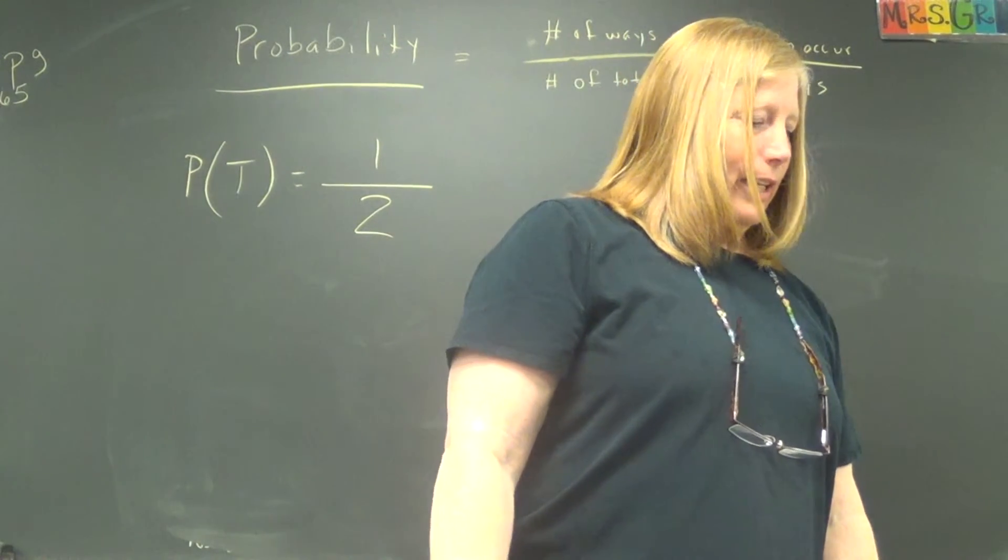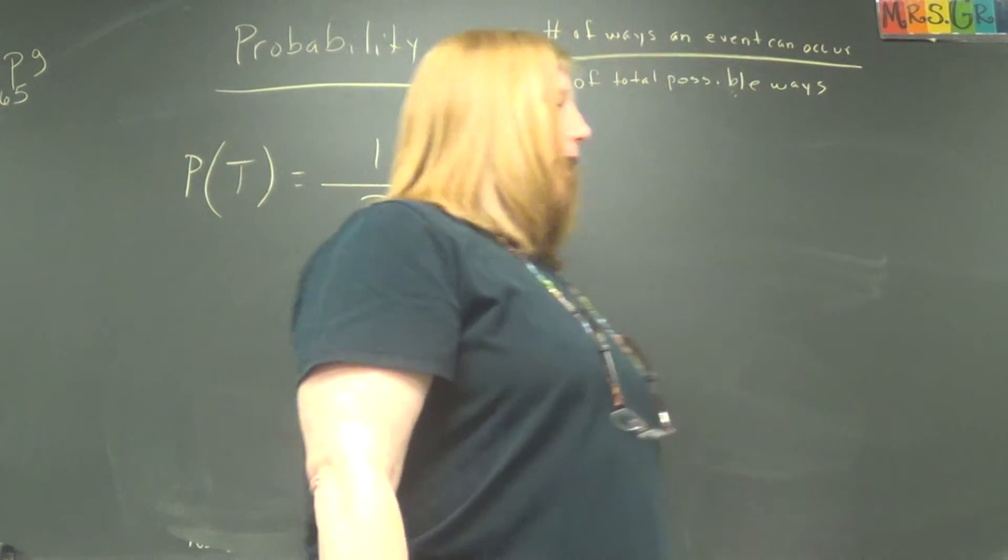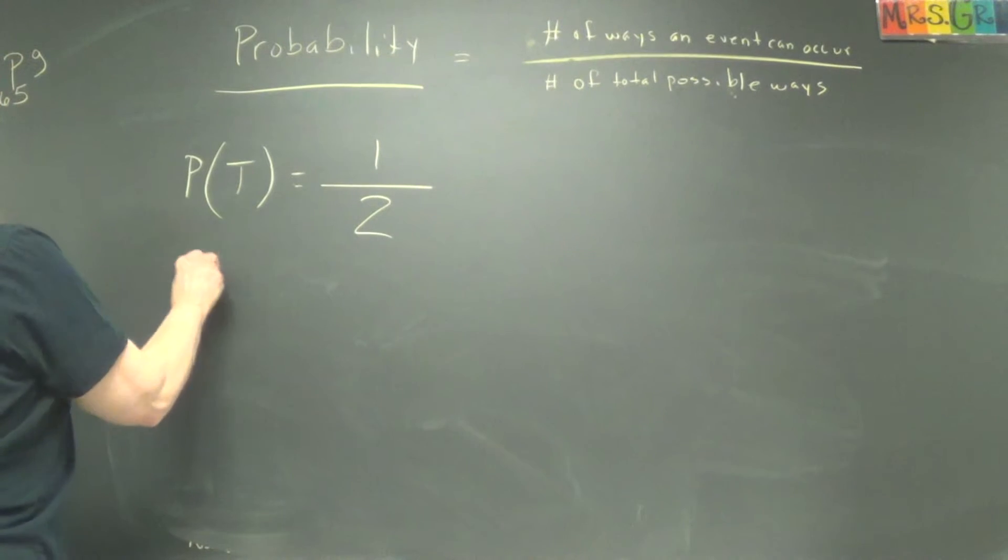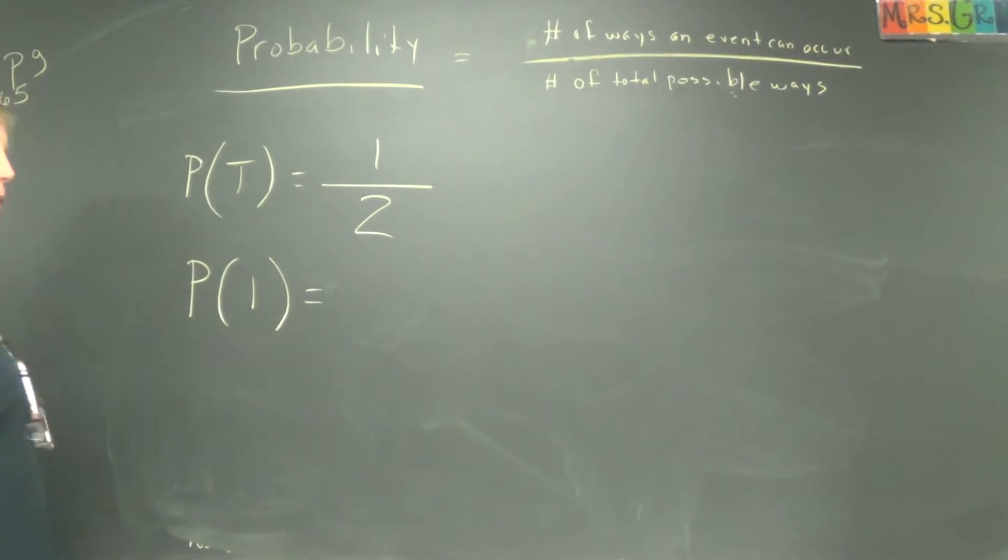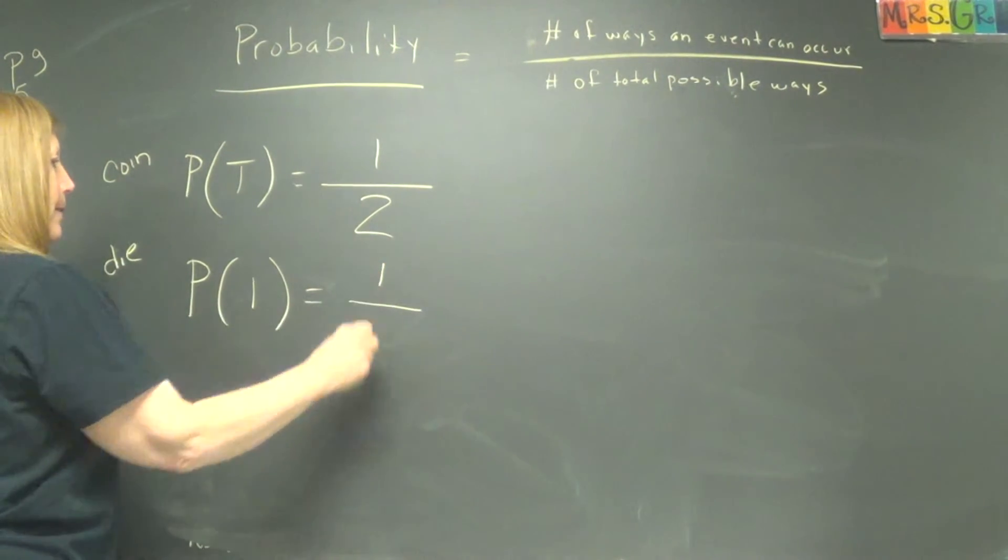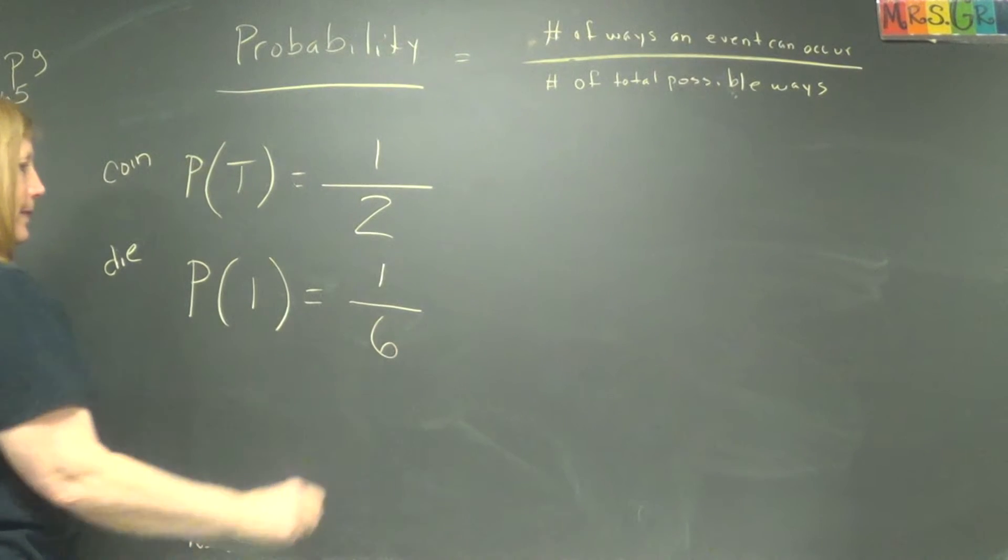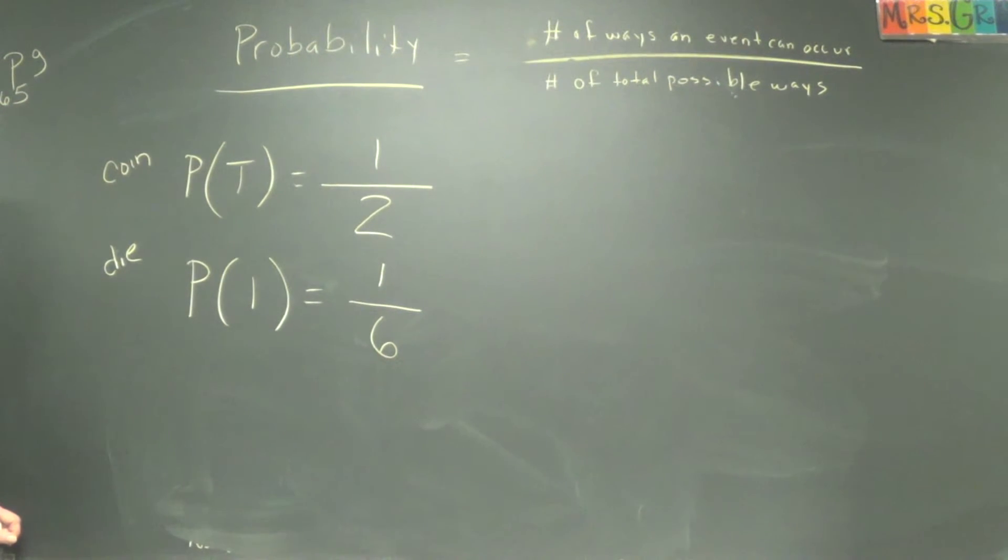All right. Let us look at the probability of, on a fair die, of rolling a one with one die. So what's the probability? So this was a coin toss. This is a die. One die. So how many ways, on a normal dice, can you roll a one? And how many ways possible? Six. All right. So the probability of rolling a one is one sixth.